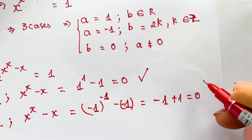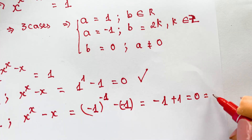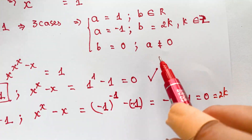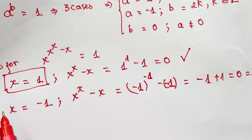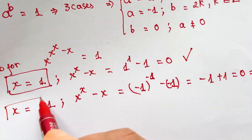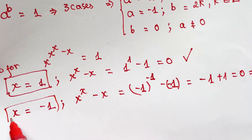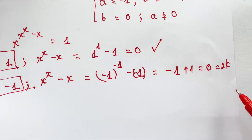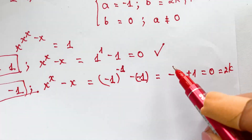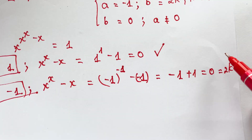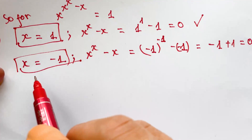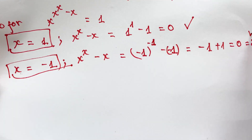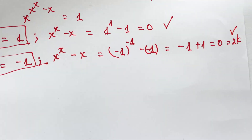The power b equals 0, which equals 2k for k = 0, so this is acceptable. Therefore x = -1 is also a valid solution.